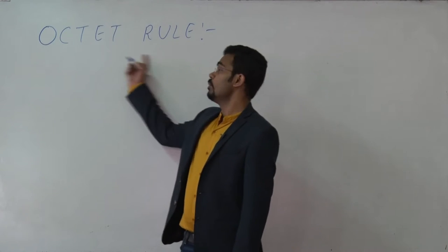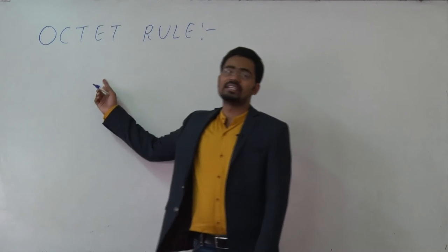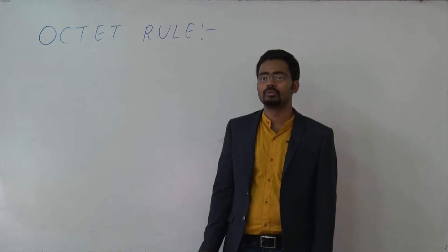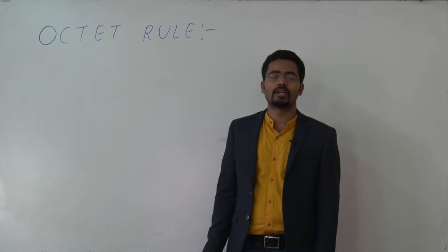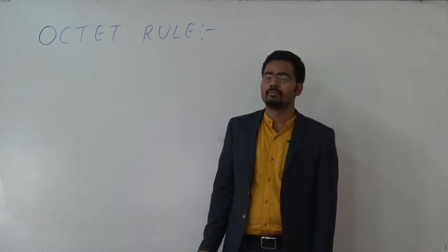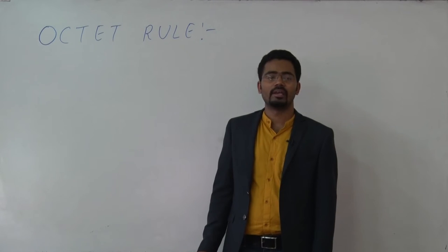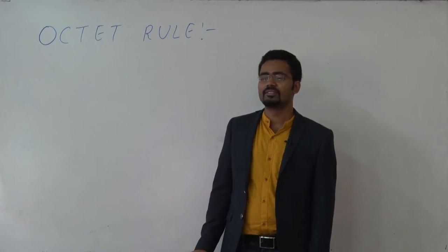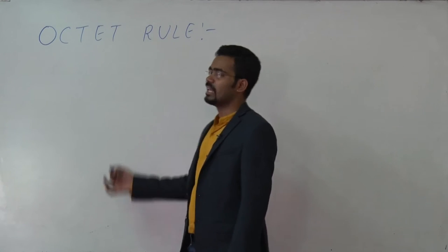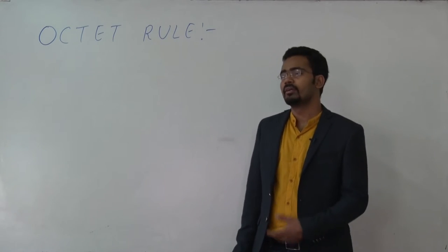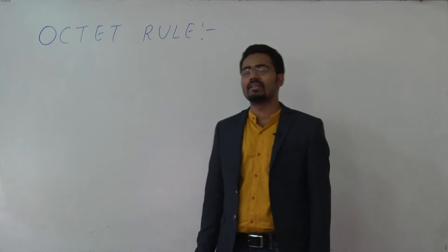So, what is the octet rule? It is the tendency of an atom to acquire 8 electrons in their valence shell. Why does any element have a tendency to acquire 8 electrons in the valence shell?